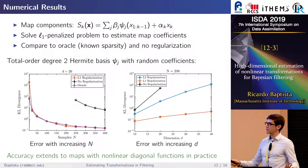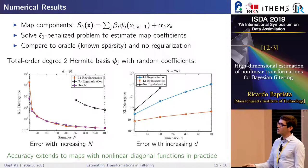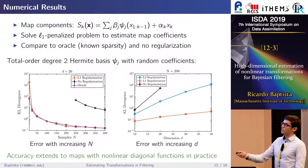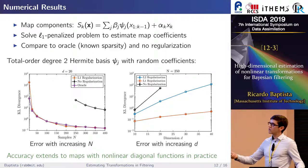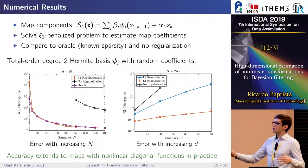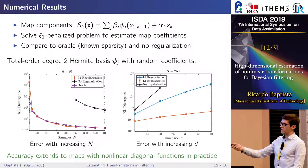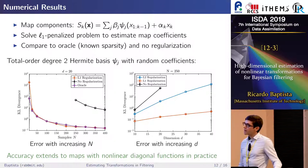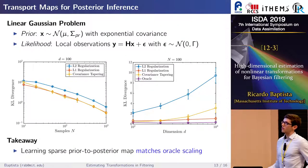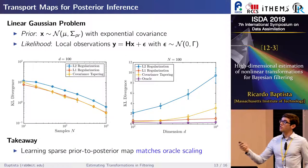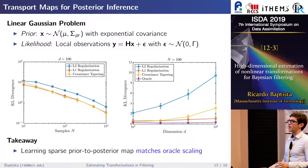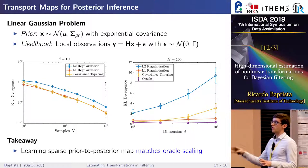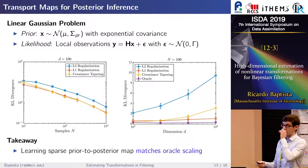We can look at how this performs for learning maps in a density estimation setting, examining KL divergence for various densities as a function of dimension with fixed sample size. Comparing estimators using no regularization, L2 regularization, and L1 regularization, there is definite improvement in KL. More interestingly, we can compose these maps as in the stochastic maps algorithm to build prior-to-posterior transformations, and examine the effect of regularization in that filtering context.